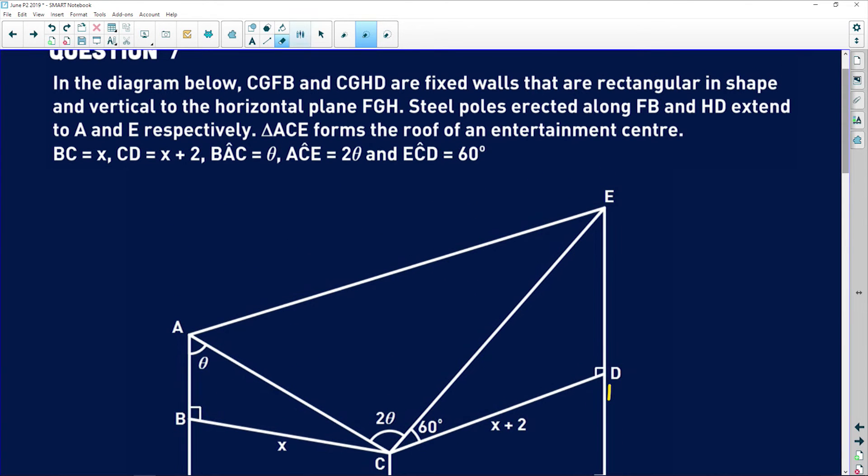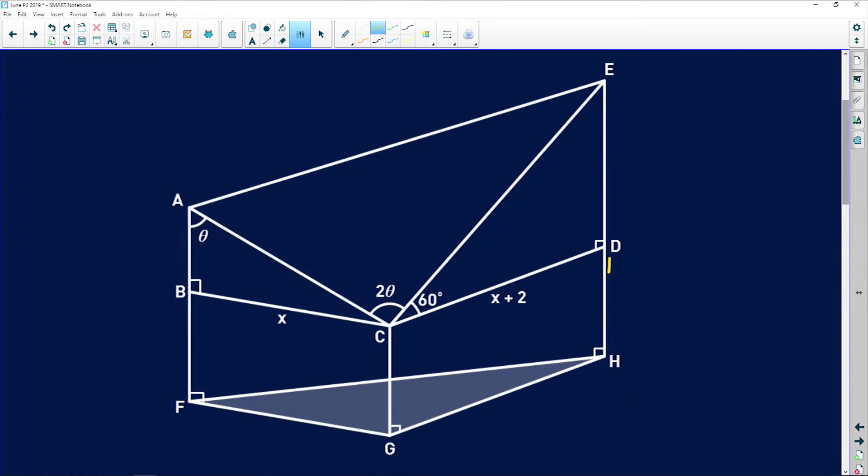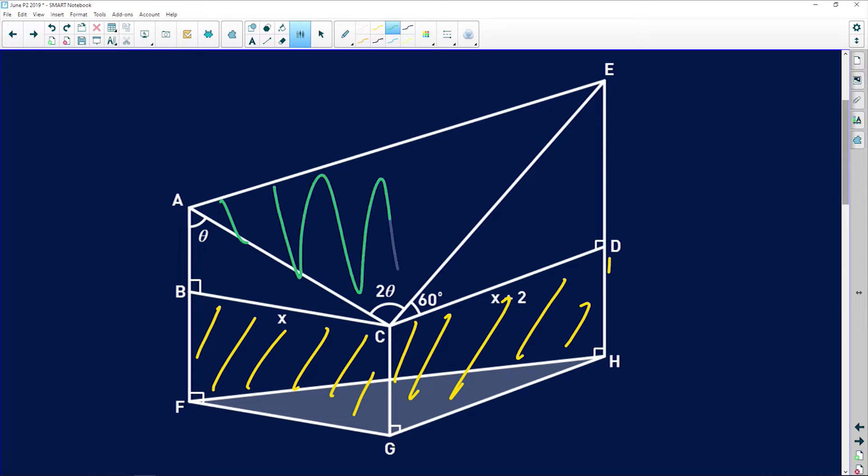And then it says steel poles are erected along FB and HD, and they extend to A and E respectively. Triangle ACE forms the roof of an entertainment center. So basically, they're saying that here these are the walls of this entertainment center, and then this over here is the roof. So that's where the 3D aspect comes in. Those two walls stand like this, and then that triangle ACE is this triangular roof here. That's why 3D trigonometry is kind of hard, because you're looking at a flat surface, but you need to imagine these walls here and this triangular roof along here.